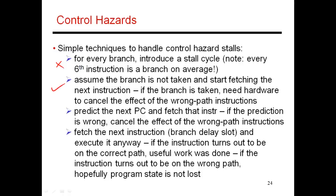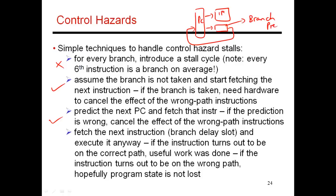The second option is what I described previously: every single cycle I make a default assumption that I will need PC plus 4 in the next cycle. If that assumption turns out to be wrong, I cancel the effects of that instruction, requiring some additional hardware. I can make it even more sophisticated — my PC feeds into instruction fetch and also into a black box that updates my PC. Normally that black box contains PC plus 4, but I can make it more sophisticated. I call that a branch predictor. This is a hardware-intensive solution we will examine in much more detail later.